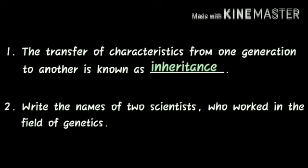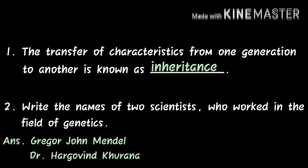Next question: write the name of two scientists who worked in the field of genetics. Yaani ki, aapko do scientists ke naam bataane hain jinhoune genetics yaani ki anwashi shiksha ke field mein experiments kiye the. Toh pehle hain Gregor John Mendel, jinhoune pea plant pe experiments kiye the aur laws of inheritance diye the. Aur second scientist hain Dr. Hargowint Khurana, inhoune bhi inheritance ke basis pe apne laws diye the.